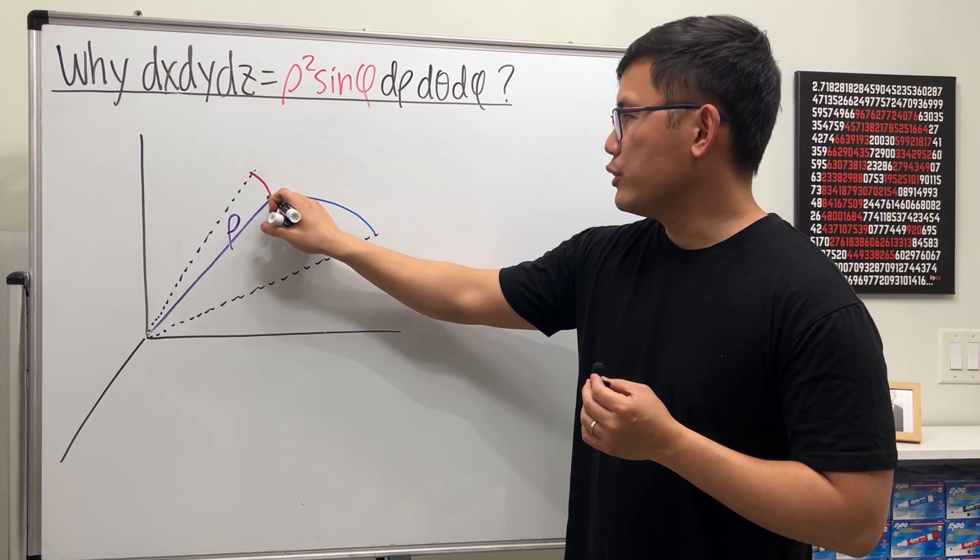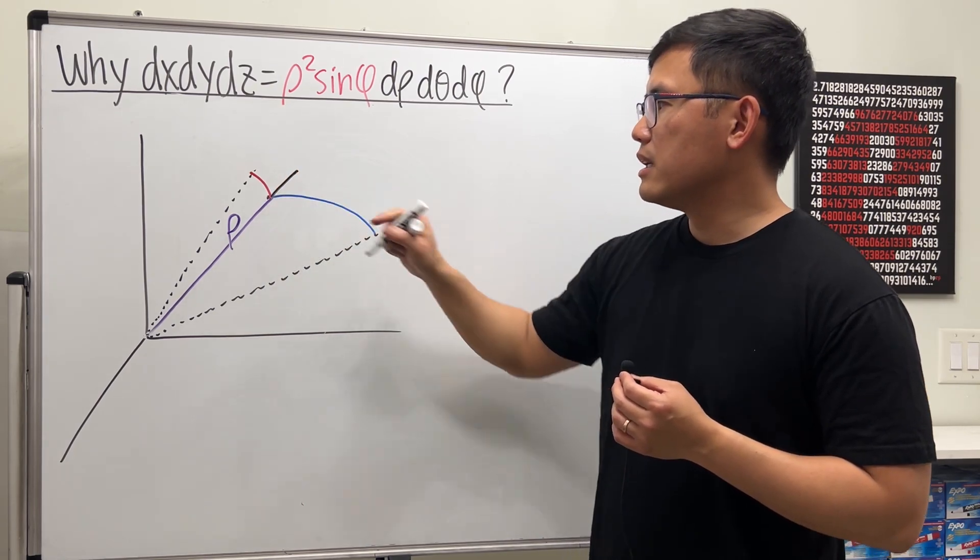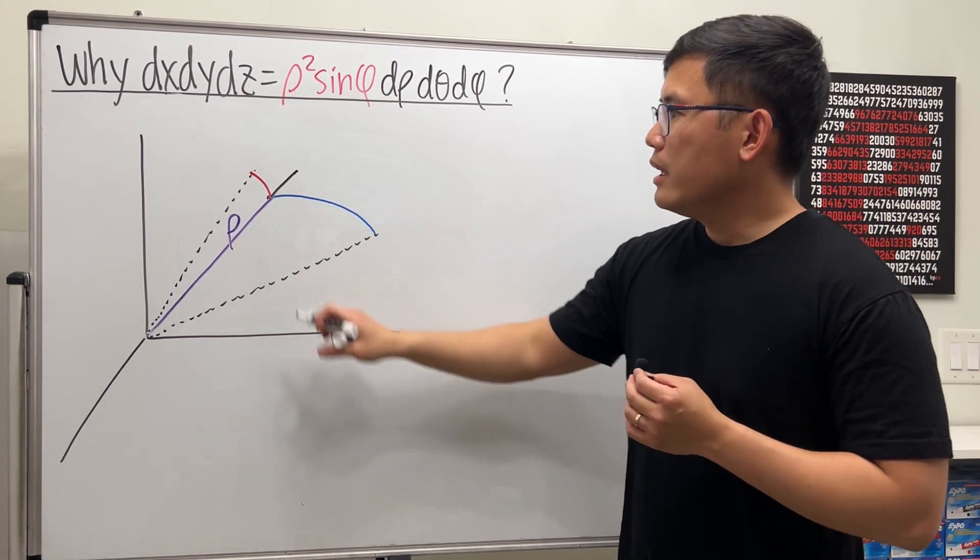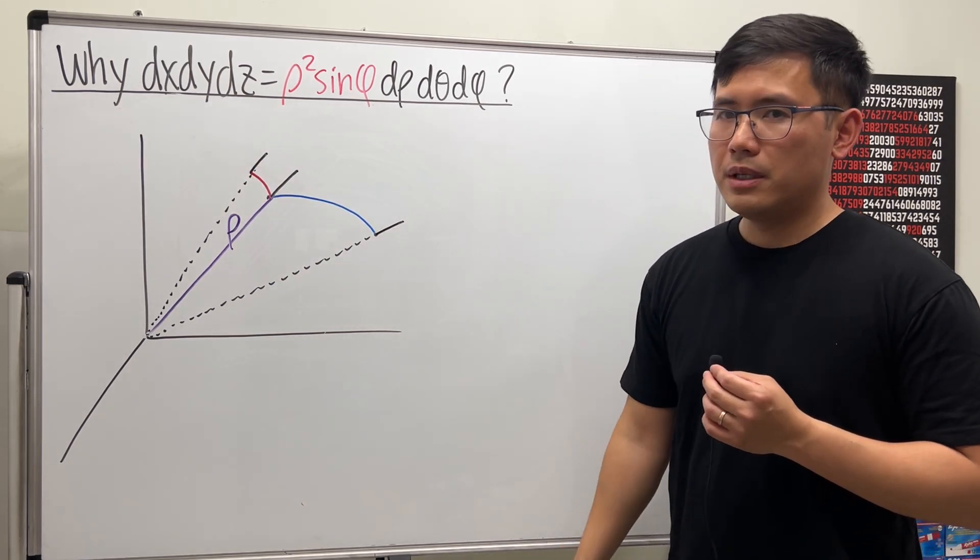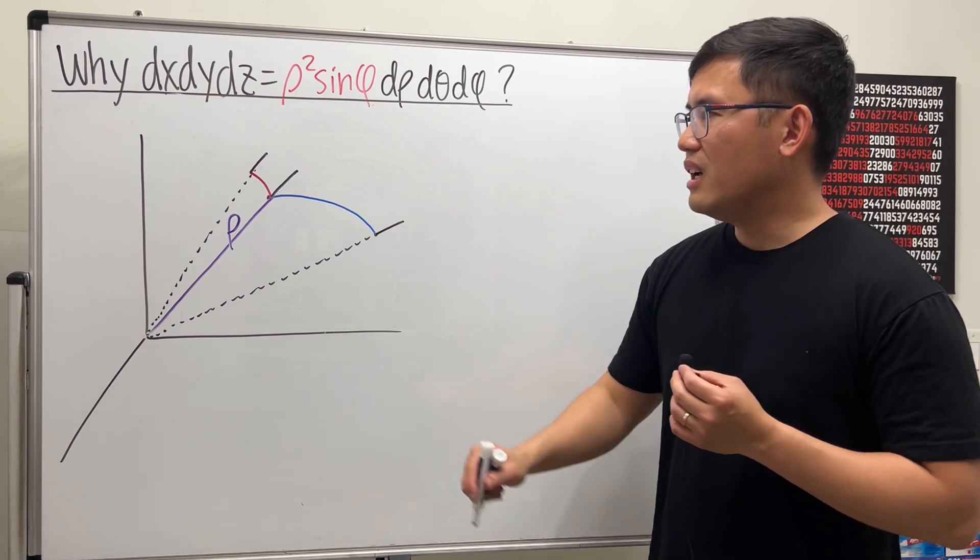Next, I'm going to extend the rho a little bit because that's going to be my d rho. And then you do the same thing right here and also right here, just extend them a little bit.